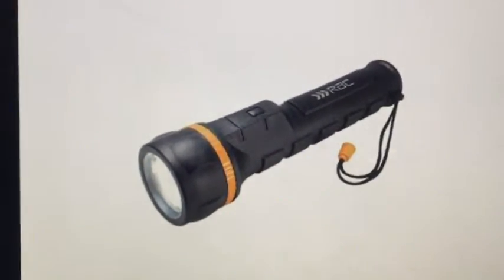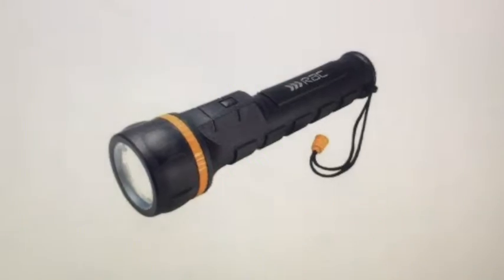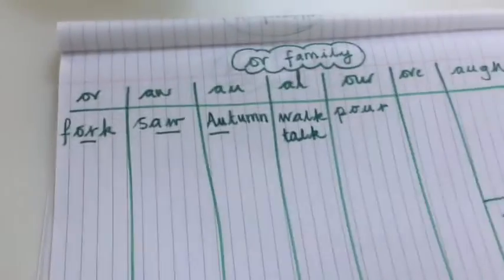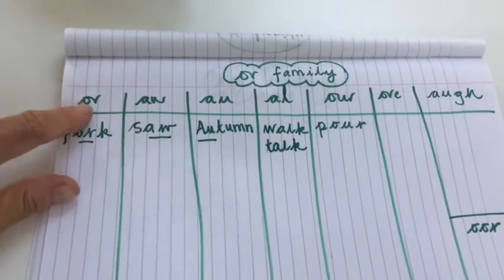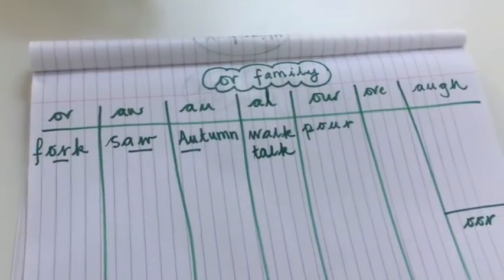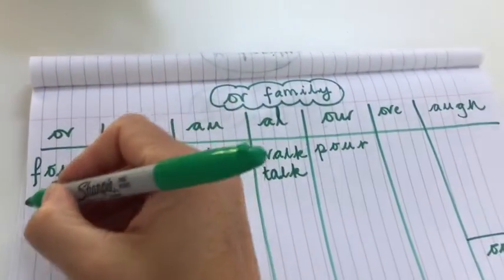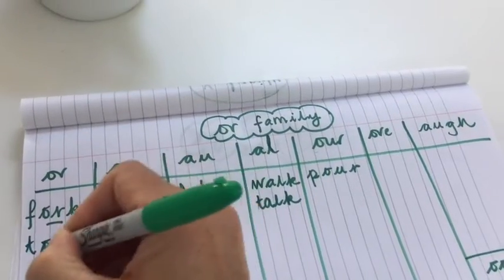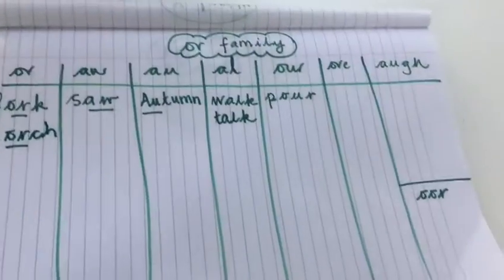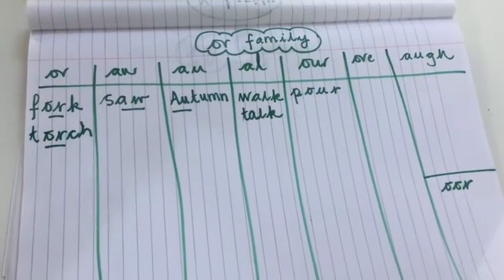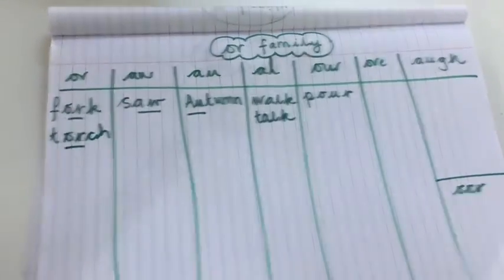Our next picture is a torch. You can hear the 'or' sound there. The 'or' sound is made by the 'or' diagraph — torch, t-or-ch. So many family members, and we're filling them up fast!